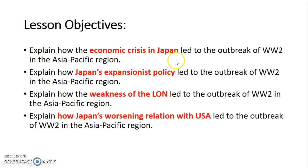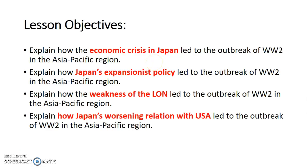When you study this, always think back to the same ideas and the same problems that Germany was facing. In the reasons for the outbreak of World War II in Europe, we have Hitler's expansionist policy — so in Japan, we have Japan's expansionist policy. The weakness of the LON appears in both Germany and Japan. The economic crisis in Japan can be linked back to the problems Germany faced under the Weimar government. In many ways they are similar, but always make it a point to distinguish the two.